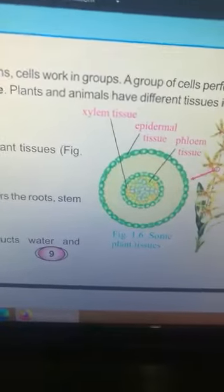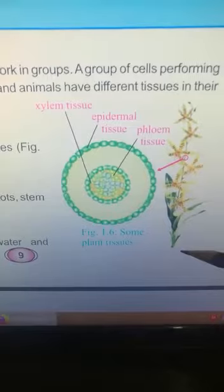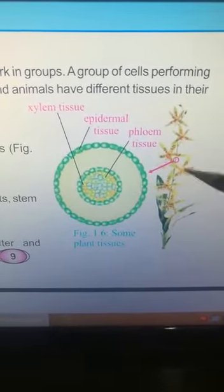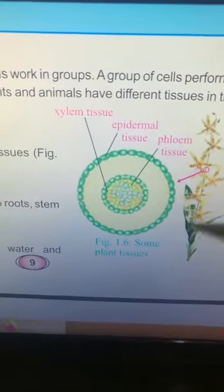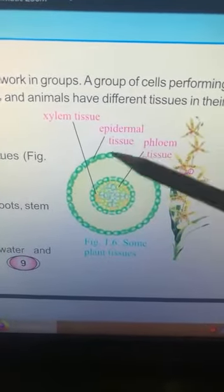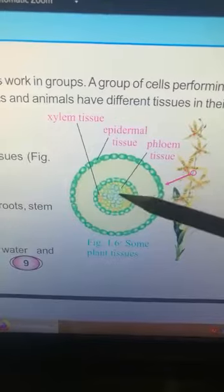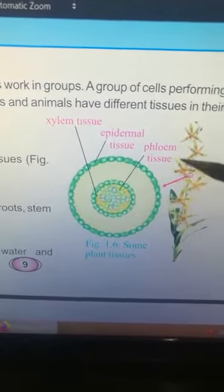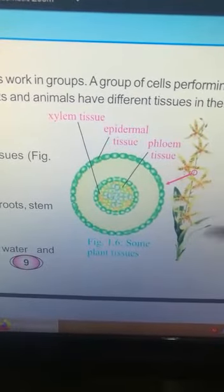Page 9, figure 1.6 shows some plant tissues. You can see the outer layer is of epidermal tissue, then in the center xylem and phloem tissues are present. As you know, xylem carries water and phloem to different parts of plants.